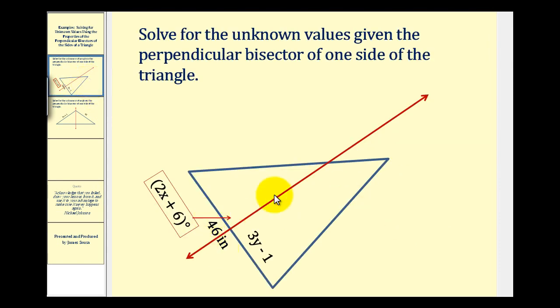Here we're given a triangle and this red line is the perpendicular bisector of this side of the triangle. Remember that that means it's perpendicular to this side of the triangle and that it also bisects this side of the triangle.